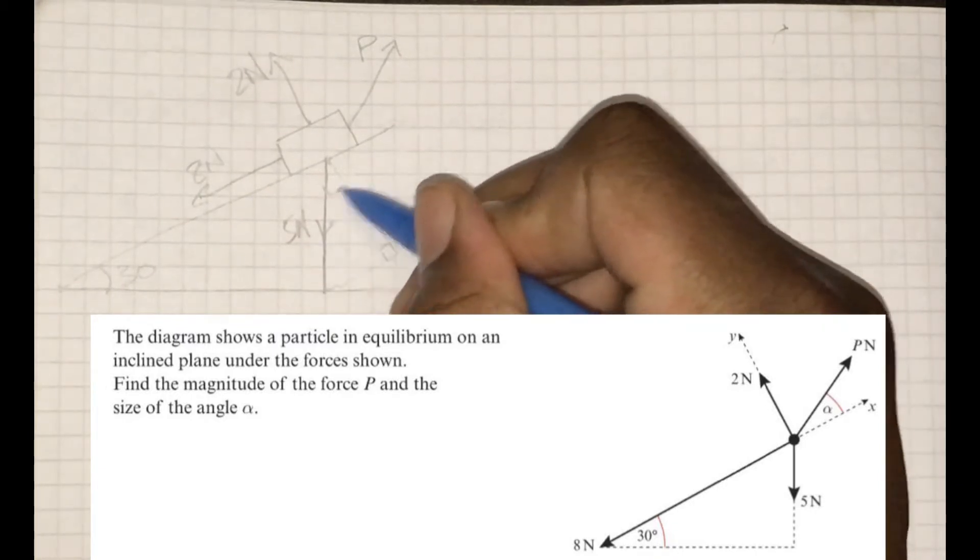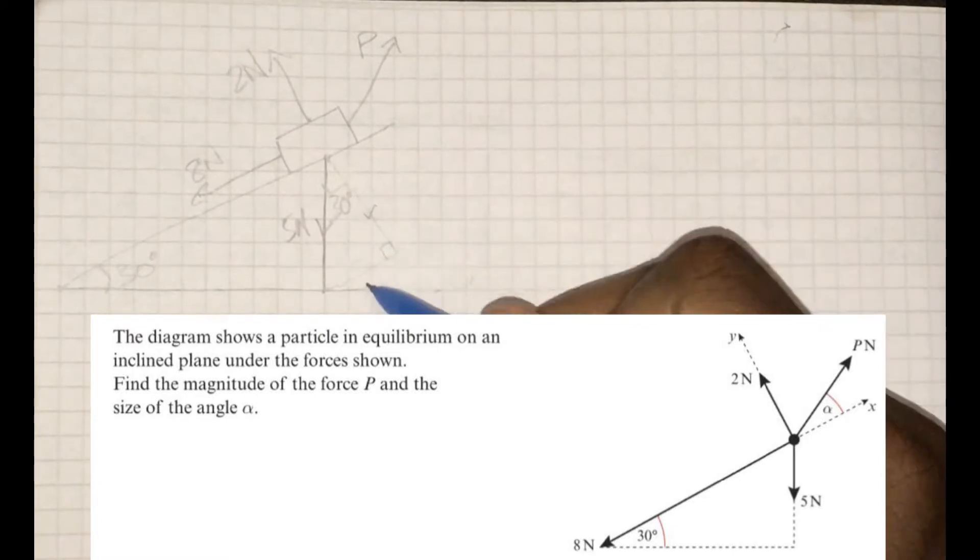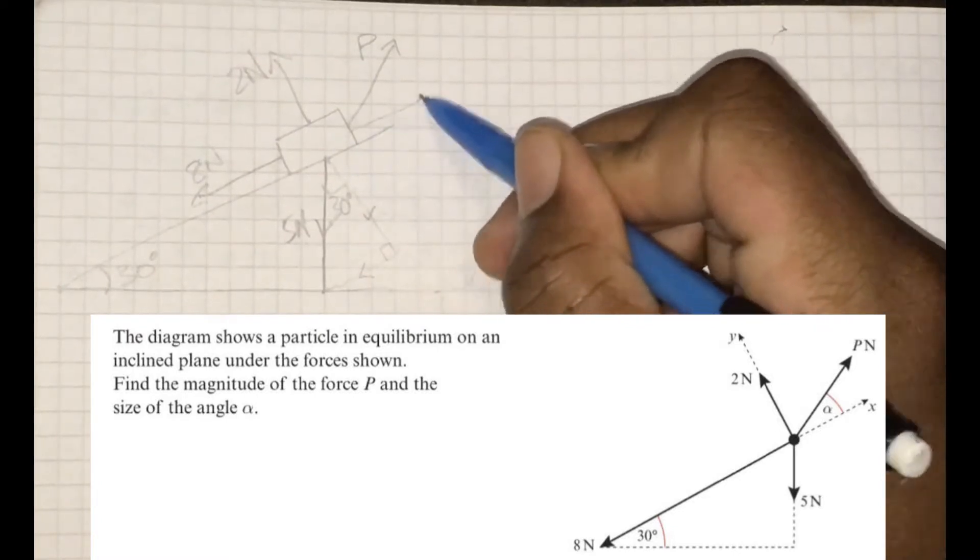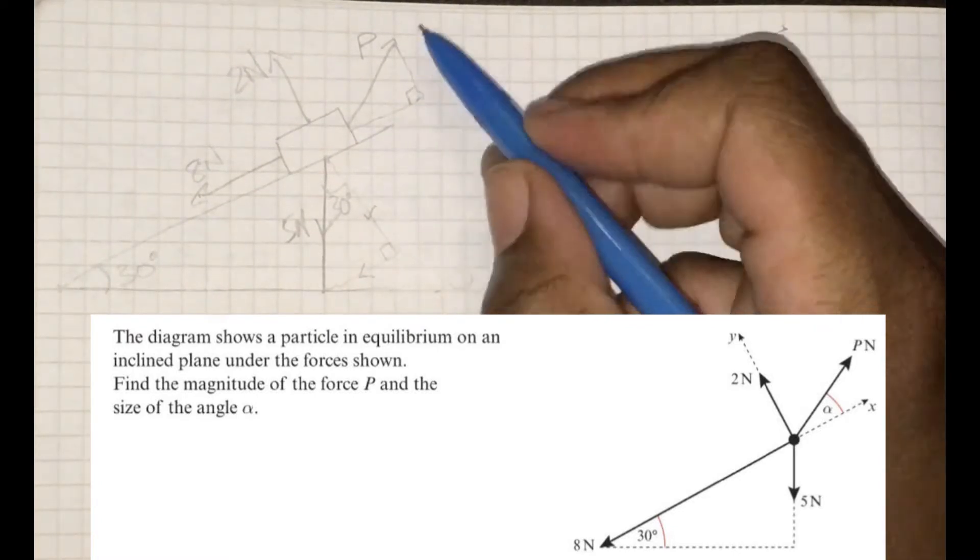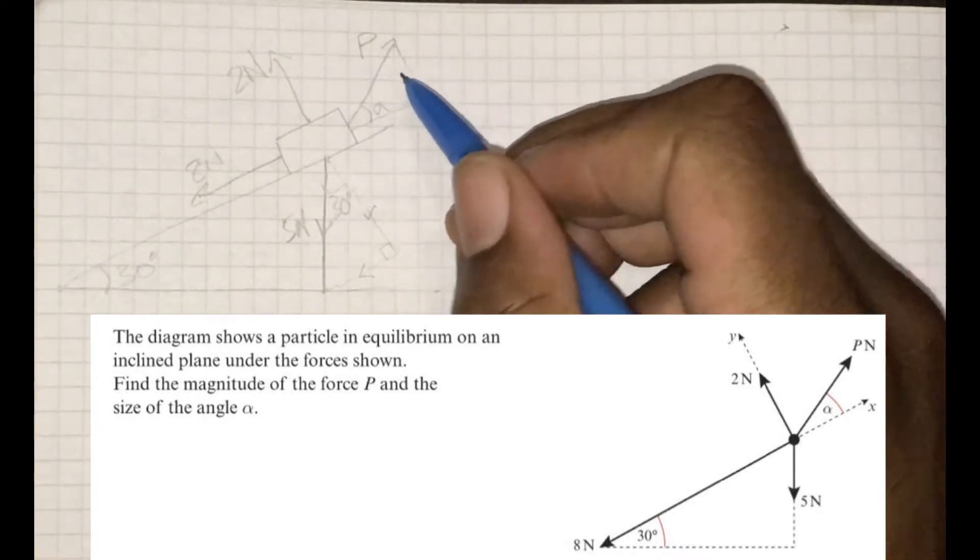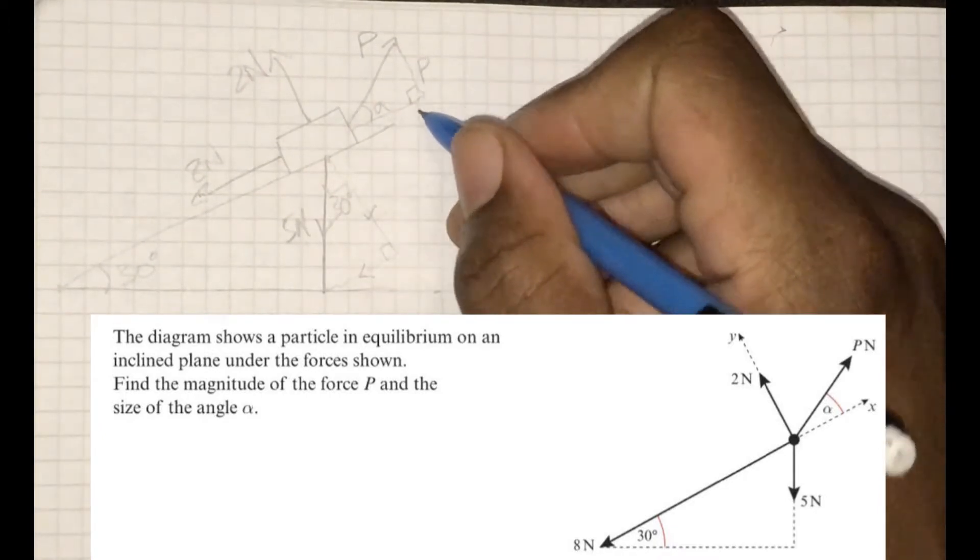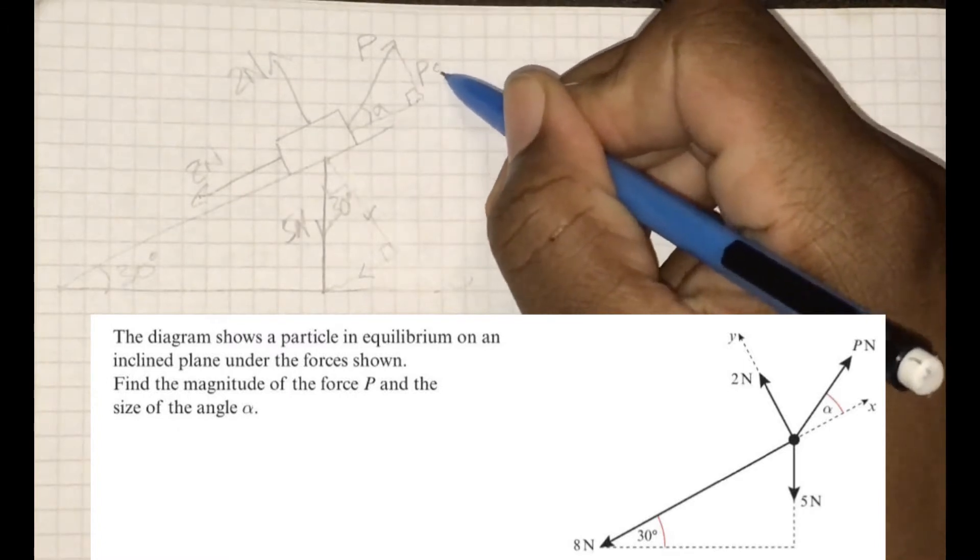So we'll go ahead and do the things we usually do, which is to make sure we have components perpendicular and parallel to the slope. So these two forces, the weight and P, we're going to break them into components, filling in the angles as we usually would.